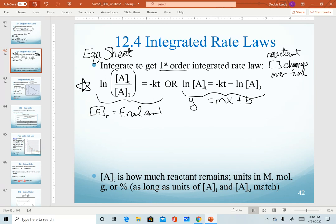So A sub t is our final amount of reactant. It is after some time. The A sub zero is our initial amount.